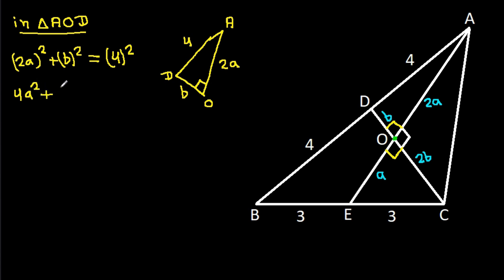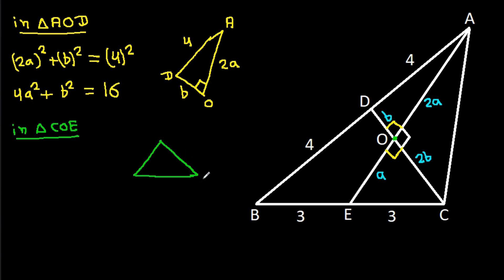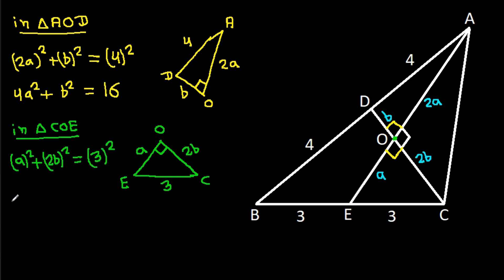From the right angle at O in triangle COE, angle COE is 90 degrees, OE is a, OC is 2b, and CE is 3. So a² + 4b² = 9.